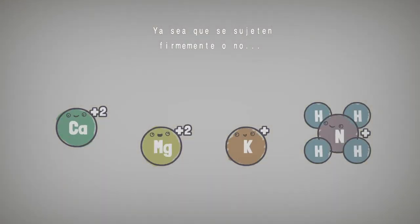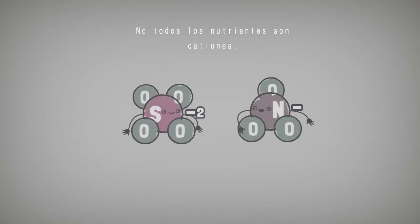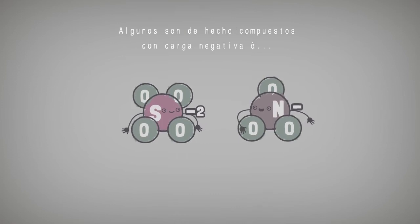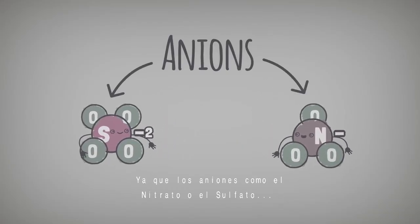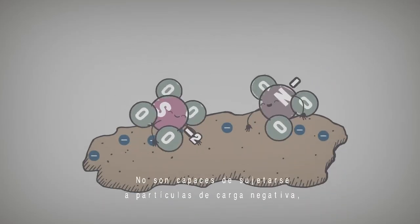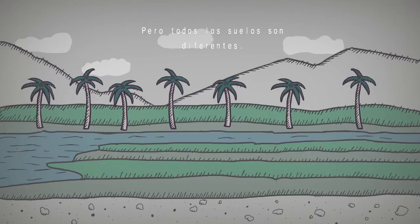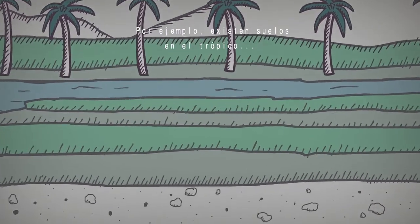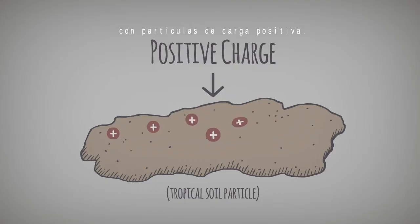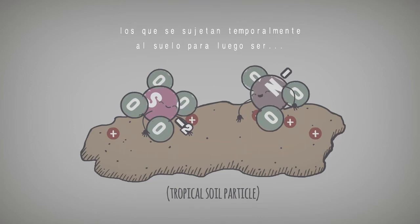Whether they are held tightly or not, the nutrients are available to the plant in exchange for other cations. Not all nutrients are cations, however. Some are actually negatively charged compounds, or anions. Since anions, like nitrate or sulfate, have a negative charge, they are unable to attach themselves to negatively charged particles and, as a result, leach out when watered. Of course, all soils are different. There are soils in the tropics, for example, that have positively charged soil particles — and in that case, it's the anions, not cations, that are held temporarily and then exchanged with other anions.